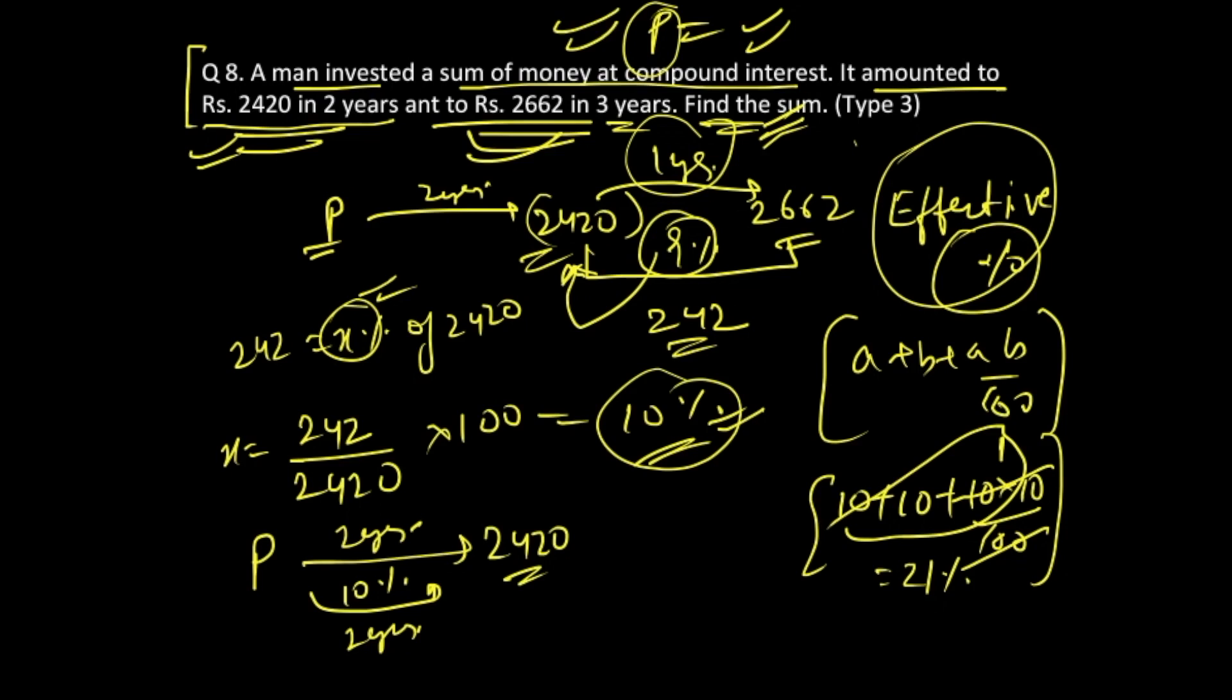Which should be acting on this initial sum P, and that is going to give you in two years this 2420. Right? Since we are using the effective percentage rate, this two years gets applied only once.